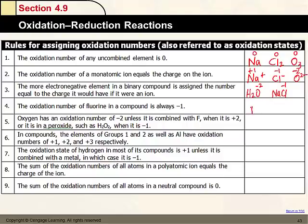Fluorine is always -1 when it's in a compound or as a monatomic ion. For example, in NaF, fluorine is -1. Oxygen is normally -2, as in water or Li₂O. However, when oxygen is bonded to fluorine in OF₂, fluorine must still be -1, so oxygen becomes +2 in that case.